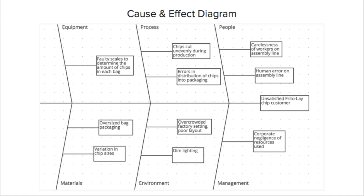In regards to causes, the equipment, the scales that they use to determine the amount of chips in each bag may be faulty. In regards to materials used in the process, they may have oversized bags used to package the chips. And the chips in the bags may vary in size, which also contributes to the process. The chips being cut unevenly during production, as well as errors in distribution of chips into the bags.